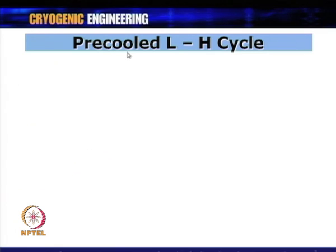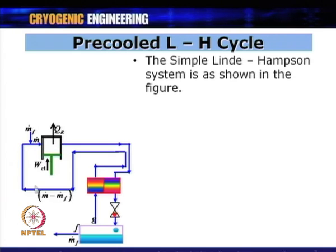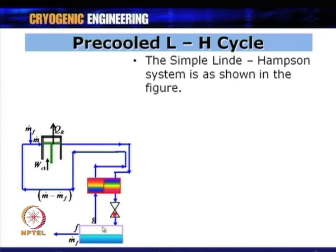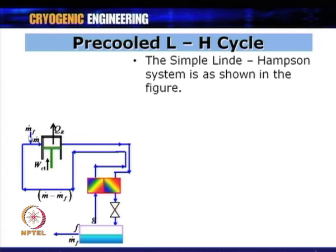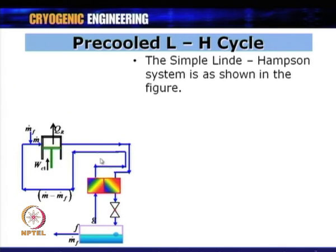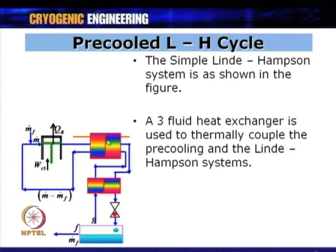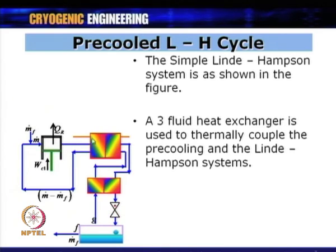The simple Linde-Hampson system has a compressor, then the compressed gas passes through a heat exchanger, expands to produce liquid m_dot_f, and the return gas pre-cools the incoming high-pressure gas before returning to the compressor. In the pre-cooled system, in addition to this heat exchanger, a pre-cooling heat exchanger is added where the high-pressure gas leaving the compressor is pre-cooled by another refrigerant passing through it at a much lower temperature.